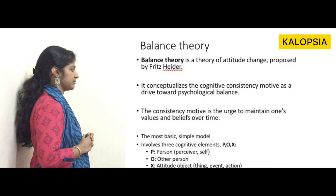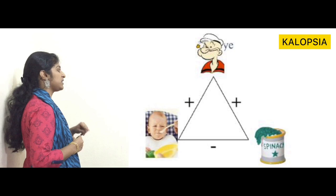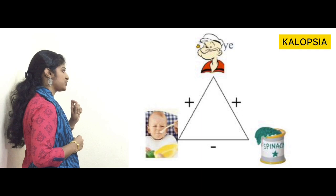Here is Heider's theory illustrated with an example. A child admires Popeye. The child doesn't like to eat spinach, but Popeye is positively associated with spinach. This is a cognitively imbalanced state, which should motivate the child to change one of the associations — that is, to eat spinach.